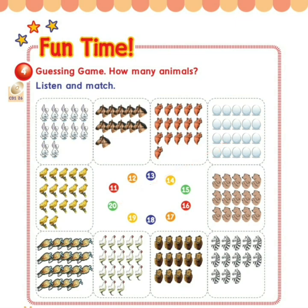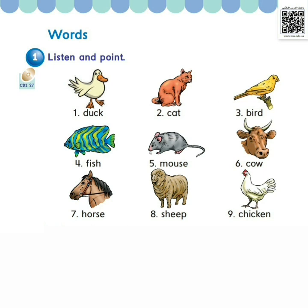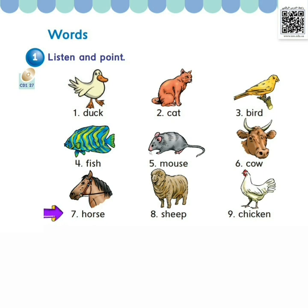Okay. Good. We're finished. Words. Exercise 1: Listen and Point. 1 Duck. 2 Cat. 3 Bird. 4 Fish. 5 Mouse. 6 Cow. 7 Horse. 8 Sheep. 9 Chicken.